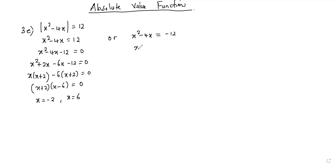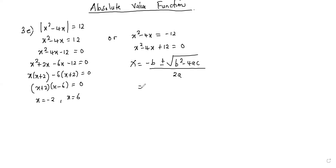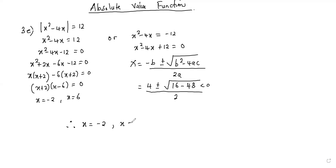Then we also have the second equation: x squared minus 4x plus 12 equal to 0. We can't find factors, so we use the quadratic formula. We get 4 plus or minus the square root of 16 minus 48, all over 2. Inside it's less than 0, so we get root of negative 32, which has no real solution. So we only have x equals negative 2 and x equals 6.